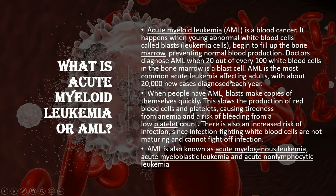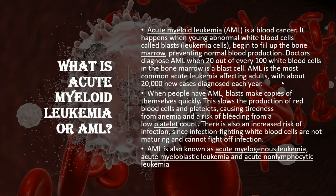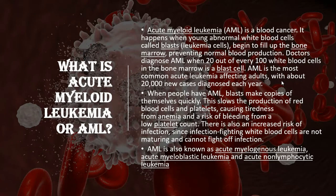AML is the most common acute leukemia affecting adults, with about 20,000 new cases diagnosed each year. In AML, blasts make copies of themselves quickly — which is why we say it is acute. This rapid blast proliferation disrupts production of red blood cells and platelets, causing cases of anemia, thrombocytopenia, fatigue, and infections.